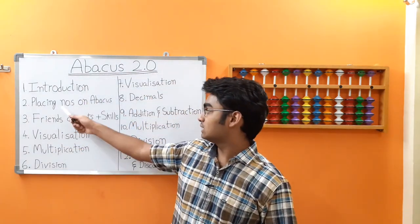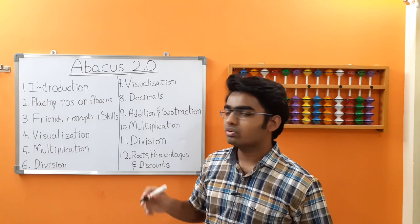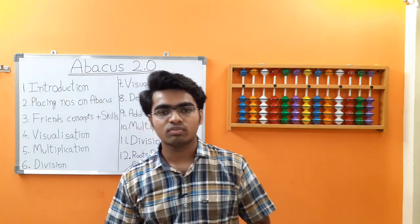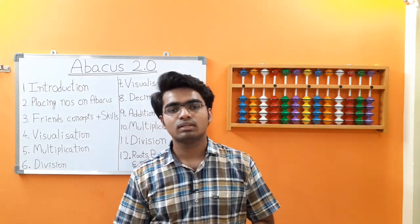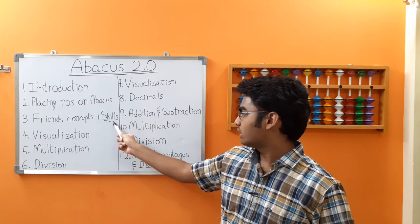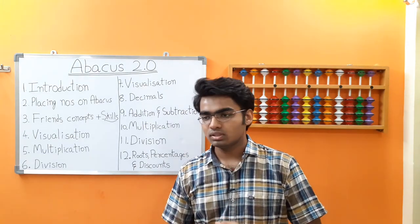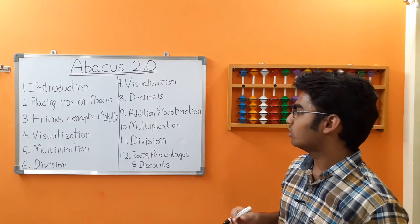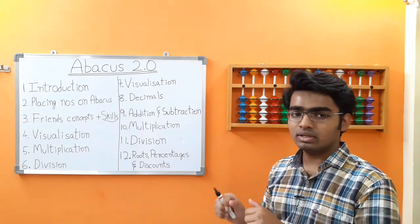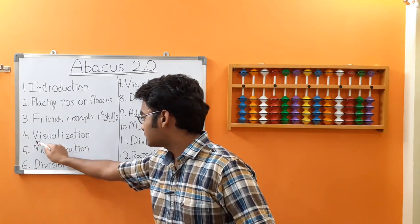As part of the friends concepts plus skills module, we are going to cover simple additions and subtractions. As you may already know, we have three friends in abacus — lazy friends, big friends, and small friends. In the skills section, we will have various tips and tricks to improve your accuracy and efficiency. We are going to give you a number and add or subtract it a set number of times so that your finger movements are fast on the abacus.